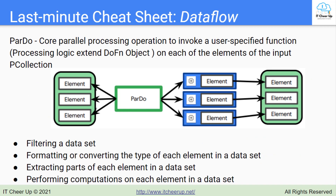Among all the core transforms, I want to highlight ParDo for the exam. When you apply a ParDo transform, you will need to provide user code in the form of a DoFn object. DoFn is a Beam SDK class that defines a distributed processing function. You can use ParDo for filtering a data set, formatting or converting the type of each element in a data set, extracting parts of each element in a data set, and performing computations on each element in a data set.